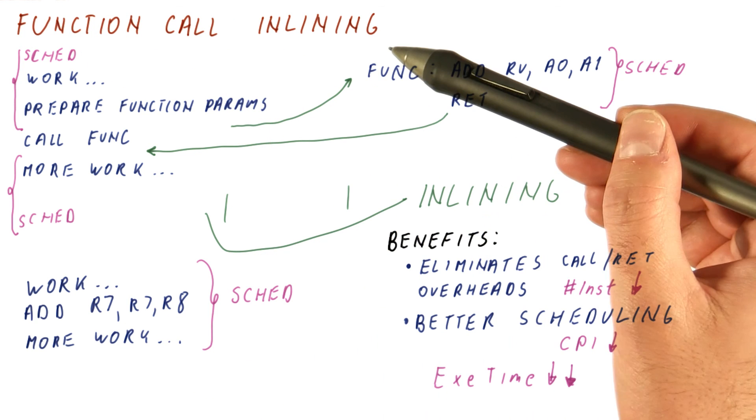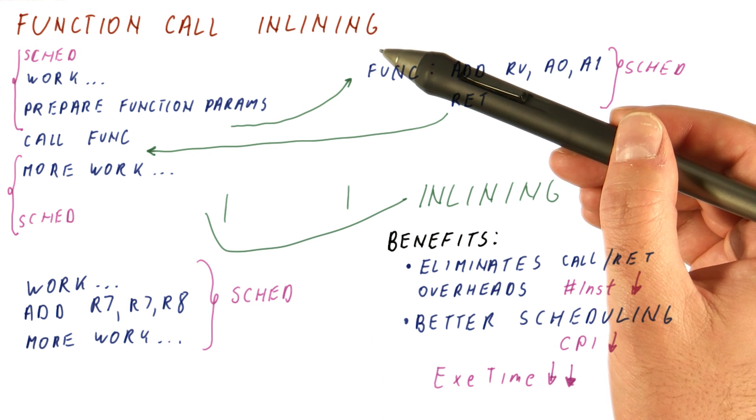And finally, there is a downside to inlining, and it's very similar to what we had for loop unrolling.